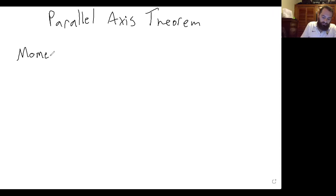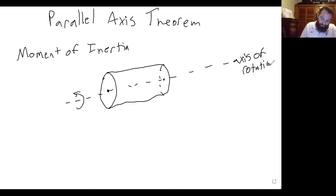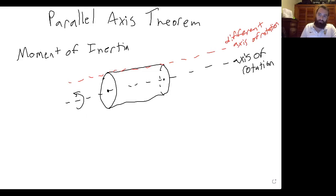Previously, when we were calculating the moment of inertia, let's say we had a cylinder, we would calculate the moment of inertia about an axis that went through the center of mass. But what if instead we wanted an axis that's somewhere besides the center of mass? So what do we do?